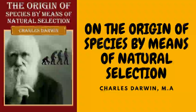In favor of this view I may add: firstly, that Columba livia, or the rock pigeon, has been found capable of domestication in Europe and in India, and that it agrees in habits and in a great number of points of structure with all the domestic breeds. Secondly, although an English carrier or short-faced tumbler differs immensely in certain characters from the rock pigeon, yet by comparing the several sub-breeds of these breeds — more especially those brought from distant countries — we can make an almost perfect series between the extremes of structure. Thirdly, those characters which are mainly distinctive of each breed — for instance the wattle and length of beak of the carrier, the shortness of that of the tumbler, and the number of tail feathers in the fantail — are in each breed eminently variable, and the explanation of this fact will be obvious when we come to treat of selection.